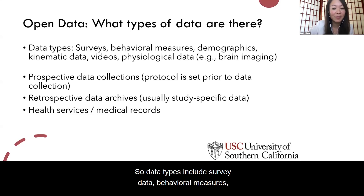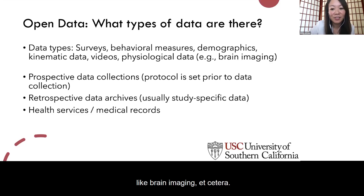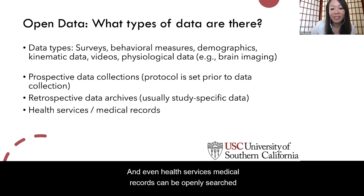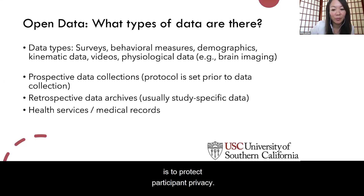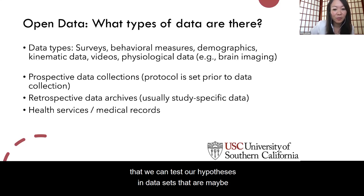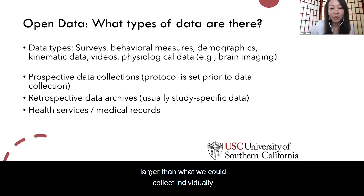There are tons of types of open data sets out there, and hopefully this is growing as more awareness comes to the power of sharing data. Data types include survey data, behavioral measures, demographics, kinematic data, video data, physiological data like brain imaging, health services data, and medical records that can be openly searched online. Of course, all of these sources are de-identified or anonymized to protect participant privacy. There are just so many options for testing hypotheses in data sets that are larger than what we could collect individually.